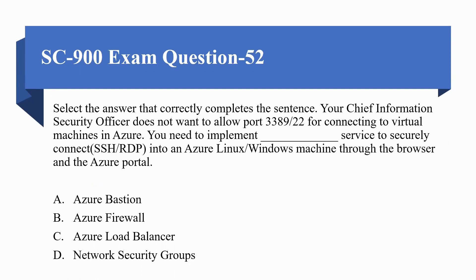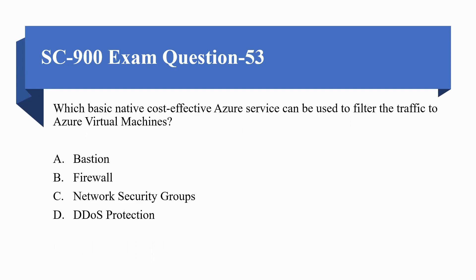Next question: your Chief Information Security Officer does not want to allow port 3389 or 22 for connecting to a virtual machine in Azure. You need to implement a service to securely connect SSH or RDP into an Azure Linux or Windows machine through the browser. Options: A) Azure Bastion, B) Azure Firewall, C) Azure Load Balancer, D) Network Security Group. The correct option is A, Azure Bastion.